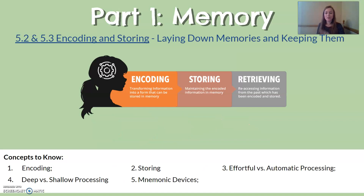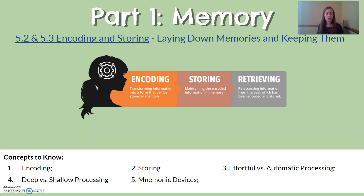Next, we have some foundational words about how memories are encoded and kept. Encoding is when a memory is going in and being put down. Storing is when you're keeping that information. Retrieving is whenever you're going to pick it back up. Effortful processing is when you're actually trying to make that memory, like studying. Automatic processing is when you're not trying to make a memory — it just happens.